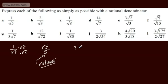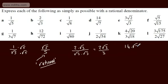On this one, we'd have 2 multiplied by root 3, divided by root 3 multiplied by root 3, giving 2 root 3 over 3. For 14 over root 7, multiply top and bottom by root 7: 14 root 7 on top and 7 on the bottom. We can cancel the 14 and 7, so this becomes 2 root 7.